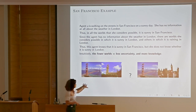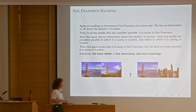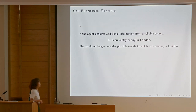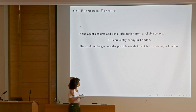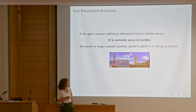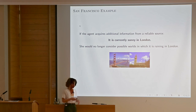We have both sunny scenarios — the agent doesn't know which is the actual world. If the agent acquires additional information — learns from a reliable source that it is currently sunny in London — she would no longer consider possible worlds in which it is raining in London, which means she would update her uncertainty range to consist of only one world. So learning in this paradigm is eliminating possibilities, eliminating possible worlds and converging.